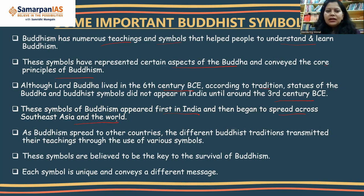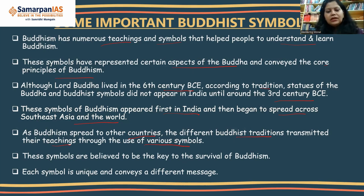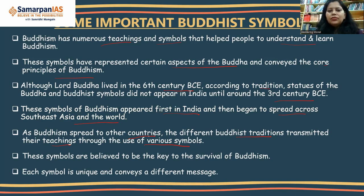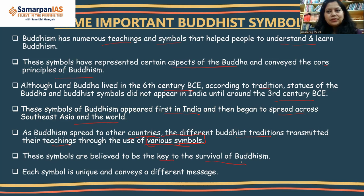Lord Buddha lived in the sixth century BC, but according to tradition, statues of Buddha and Buddhist symbols did not appear in India until around the third century BC. These symbols of Buddhism appeared first in India, the birthplace of Buddhism, and then began spreading across Southeast Asia and the world — to Sri Lanka, Southeast Asian countries, China, Nepal. As Buddhism spread, different Buddhist traditions transmitted their teachings through the use of various symbols, and new schools like Tibetan Buddhism were formed. These symbols are believed to be the key to the survival of Buddhism, and each symbol is unique and conveys a different message.